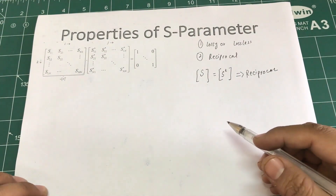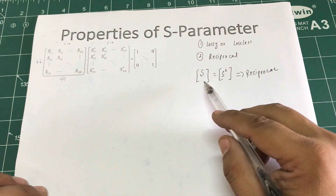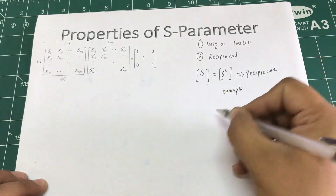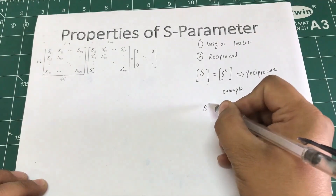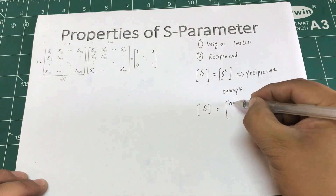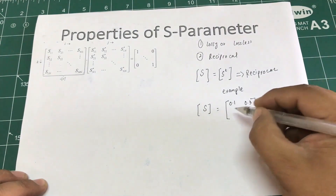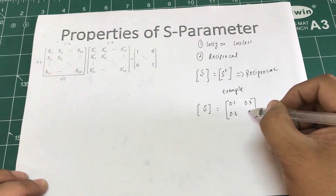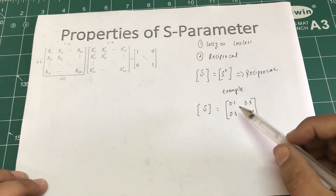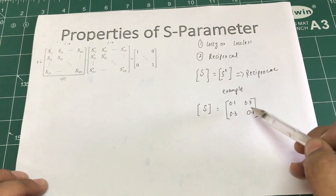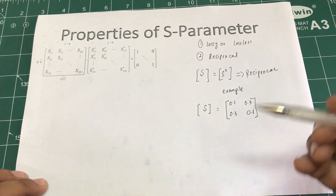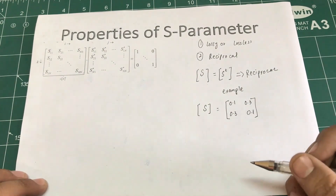Let's look at an example. Say I have a two-port network with these S-parameters: 0.1, 0.3, 0.3, 0.1. The basic thing is that if the elements across the main diagonal are symmetric, then the network is a reciprocal network.